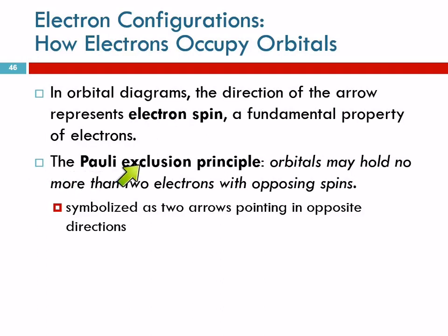There's an important principle called the Pauli Exclusion Principle that says orbitals may hold no more than two electrons, and they have to have opposing spins. So, you can't have two electrons that are spinning in the same direction in the same orbital. You can have two, but they have to be spinning in opposite directions. So, in those orbital diagrams, we symbolize that by using arrows pointing in different directions. We've got one pointing up and one pointing down.